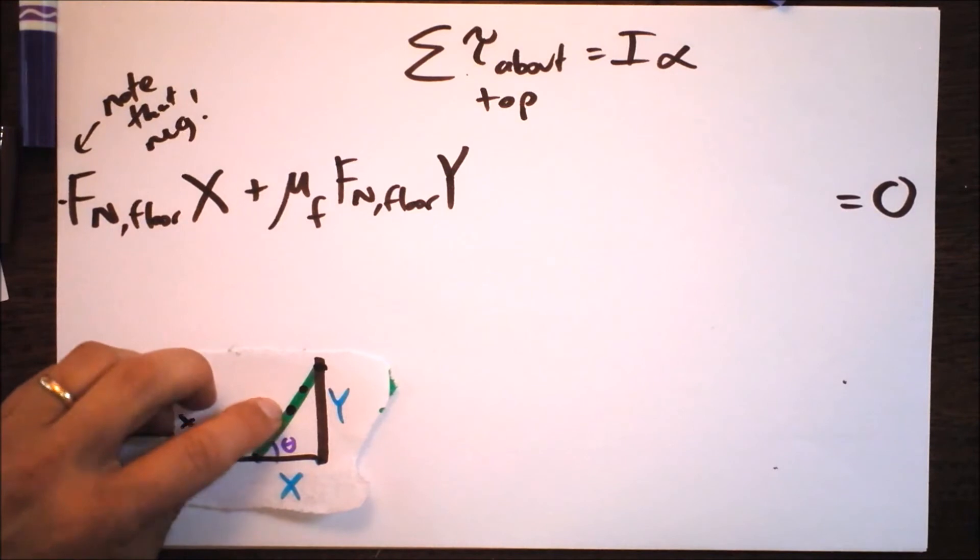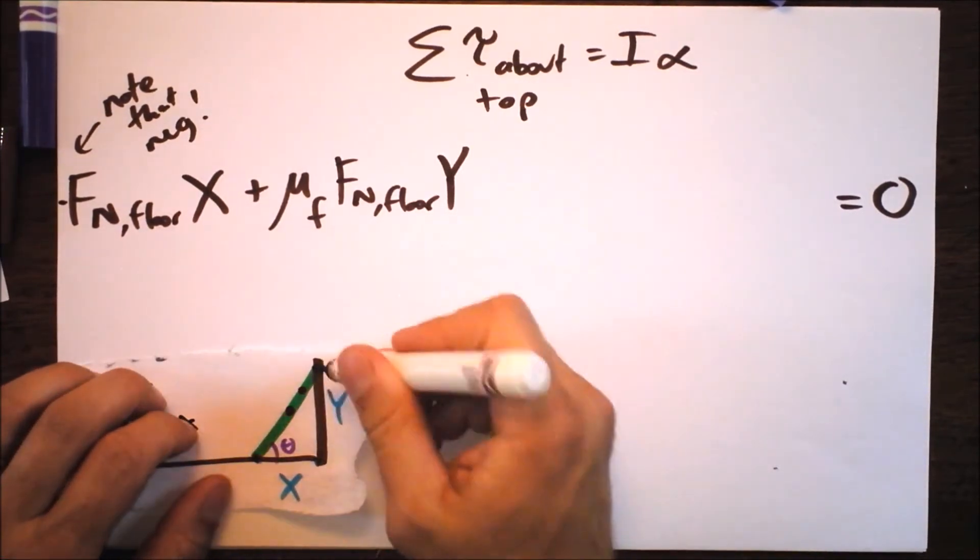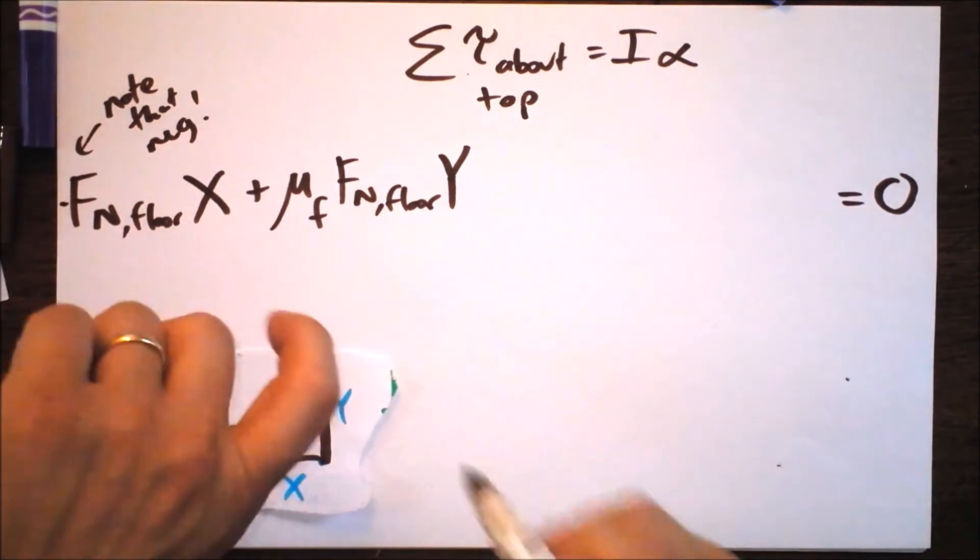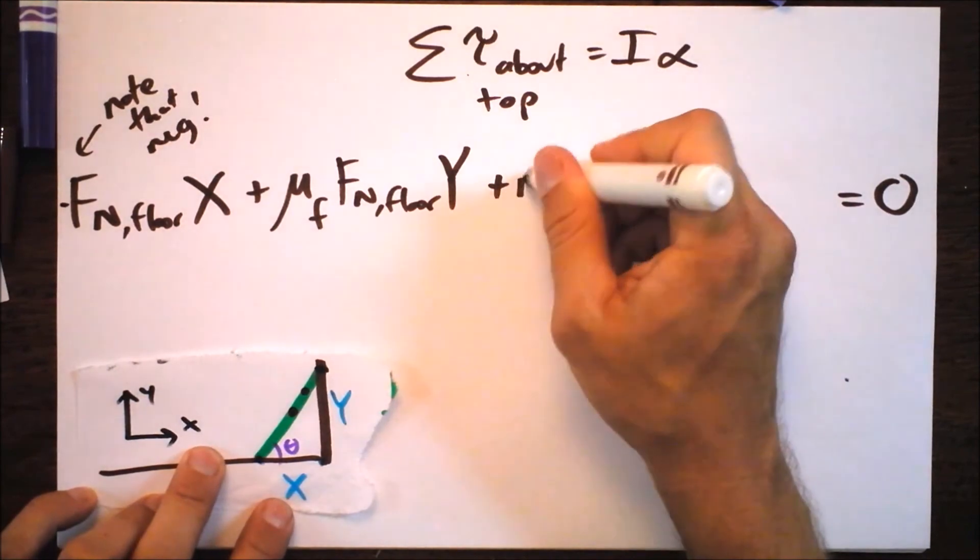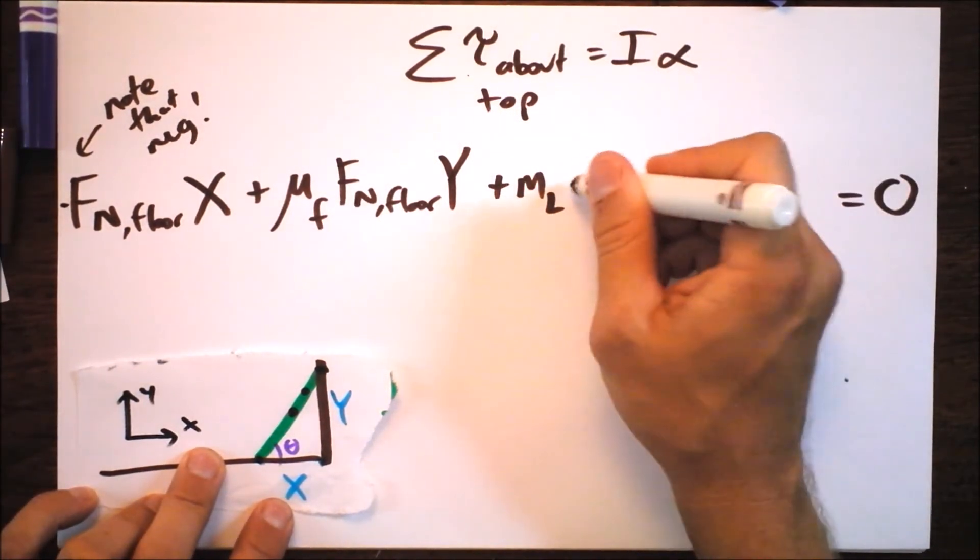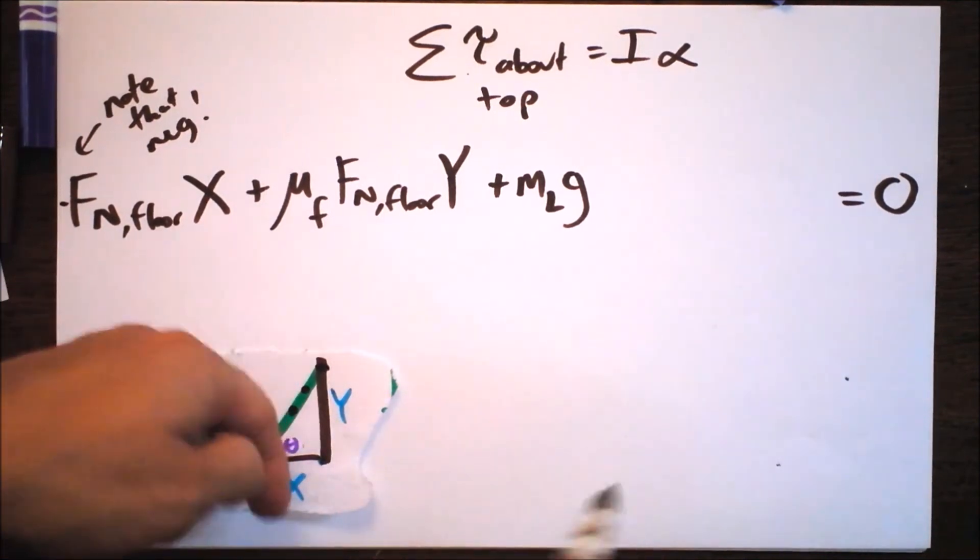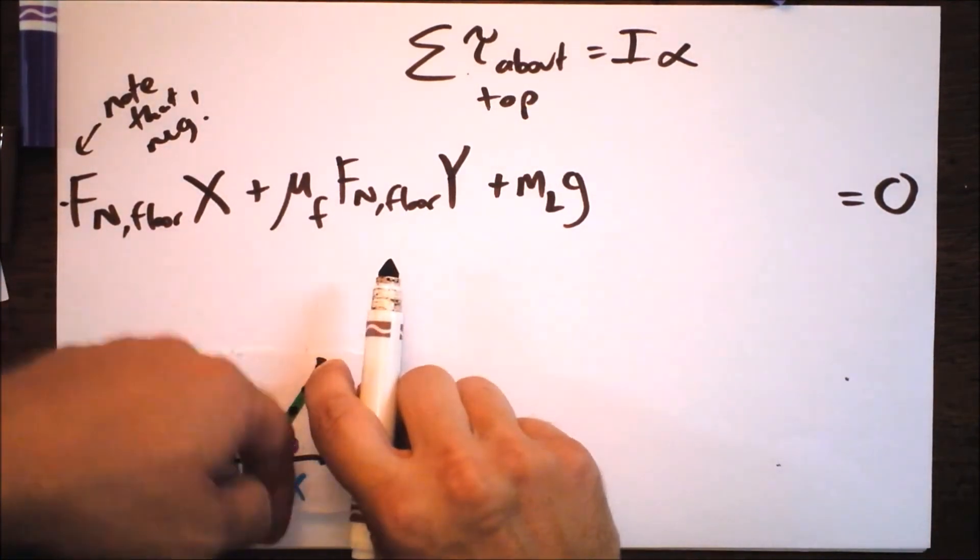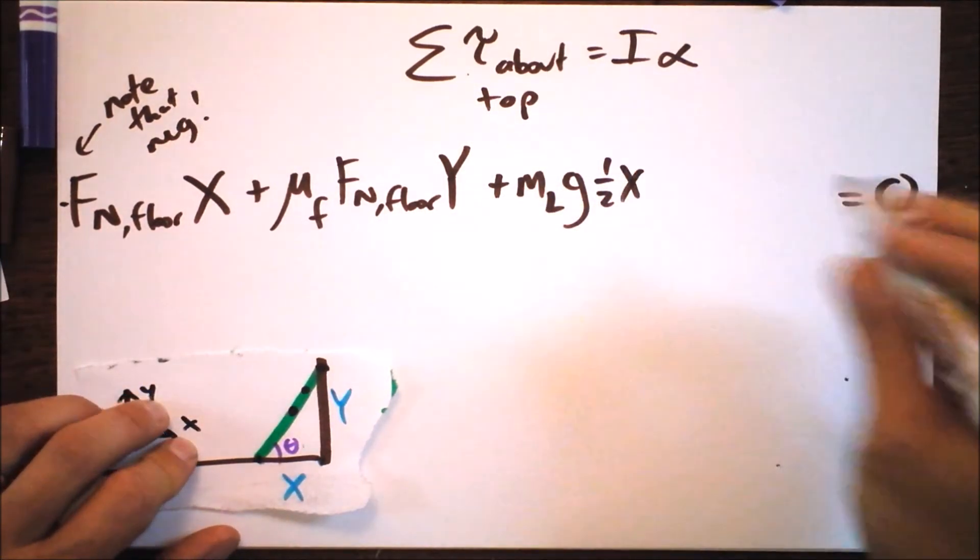There are these other two torques. These forces are straight down. So if this is the axis of rotation, those would both cause it to rotate in a counterclockwise fashion. So I'm going to be adding two more terms here. I've got mass of the ladder times baby g. And that's going to be half of x. So the r perp in that case is going to be half of X.